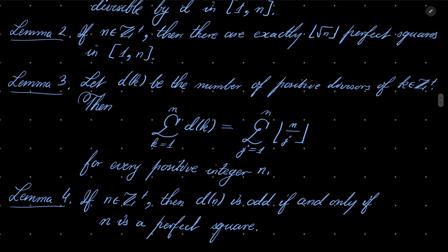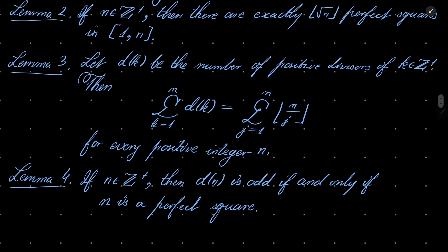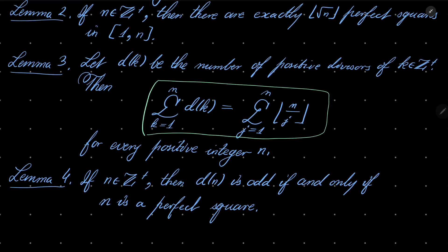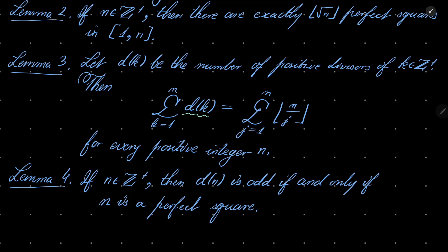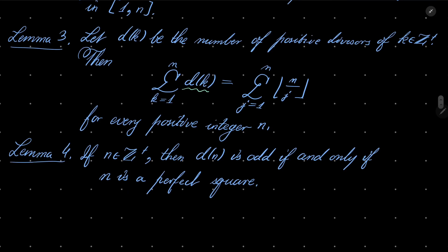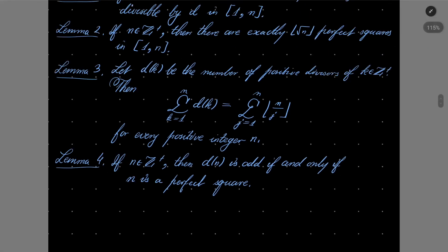Third lemma is about the well-known arithmetic function d of k. Let d of k be the number of positive divisors of some positive integer k. Then the sum going from k equals 1 to n of d(k) equals the sum going from j equals 1 to n of floor of n over j, for every positive integer n. Fourth lemma: the number of positive divisors of n is odd if and only if n is a perfect square. I will prove these four lemmas and our solution will flow from there.